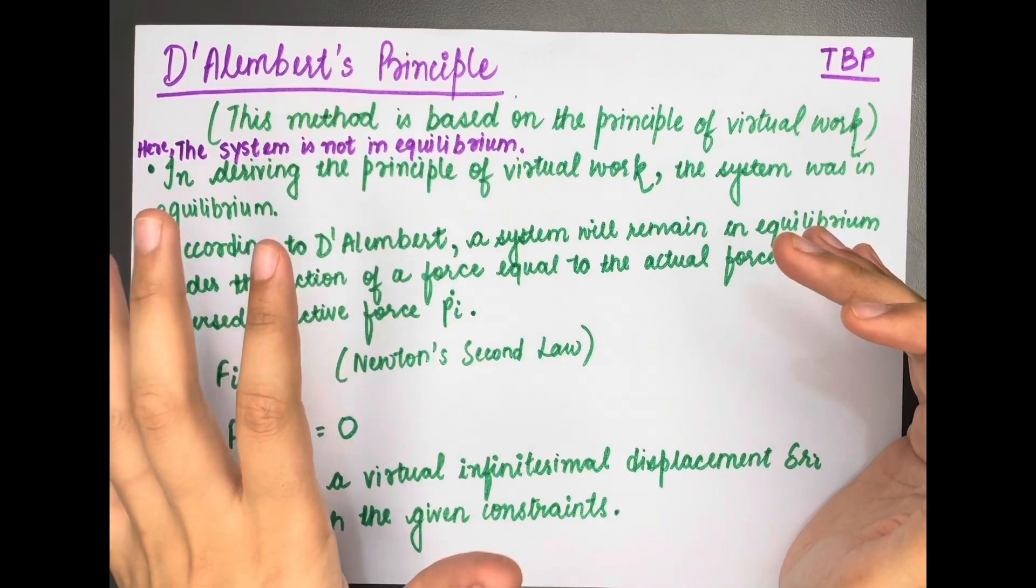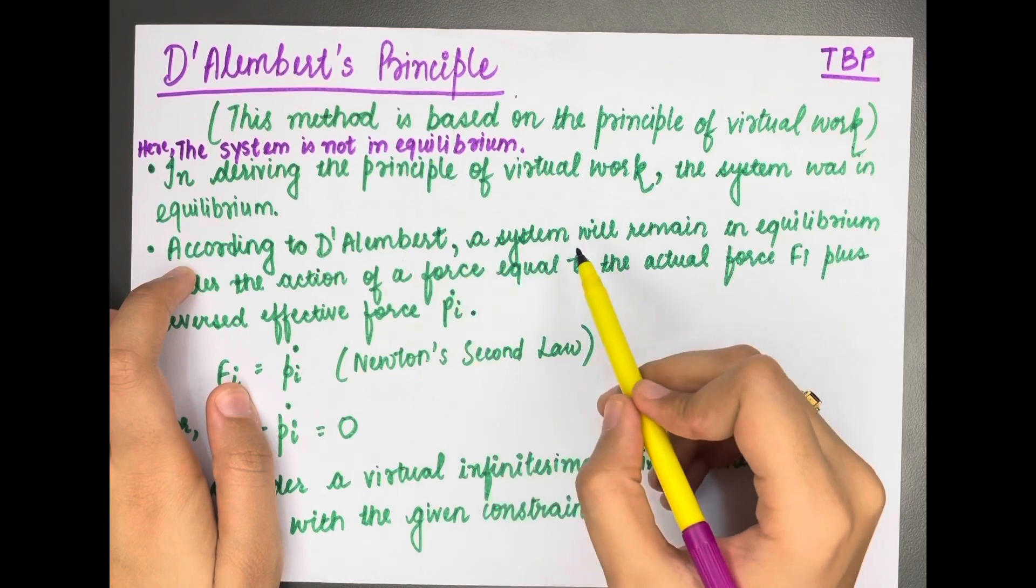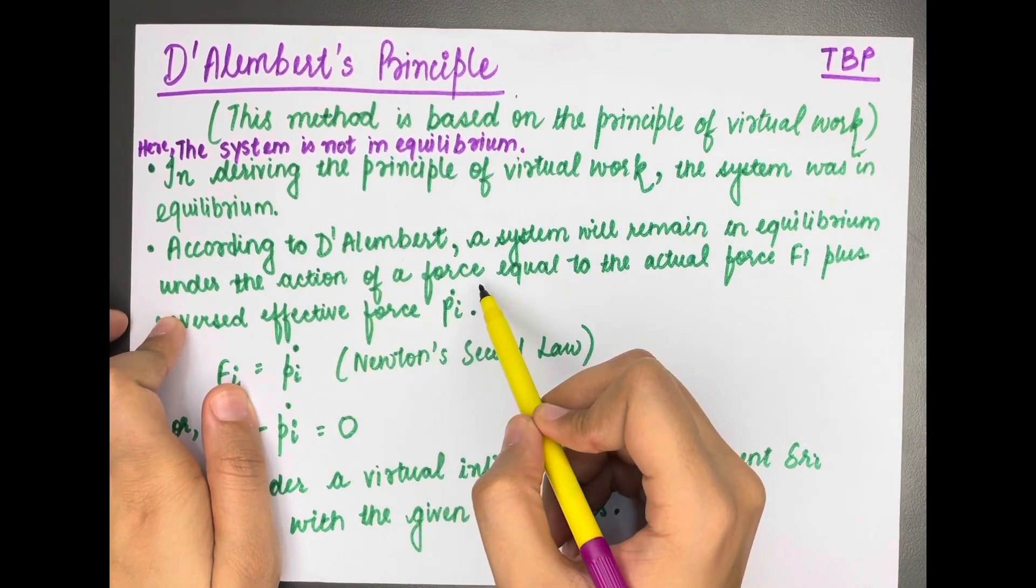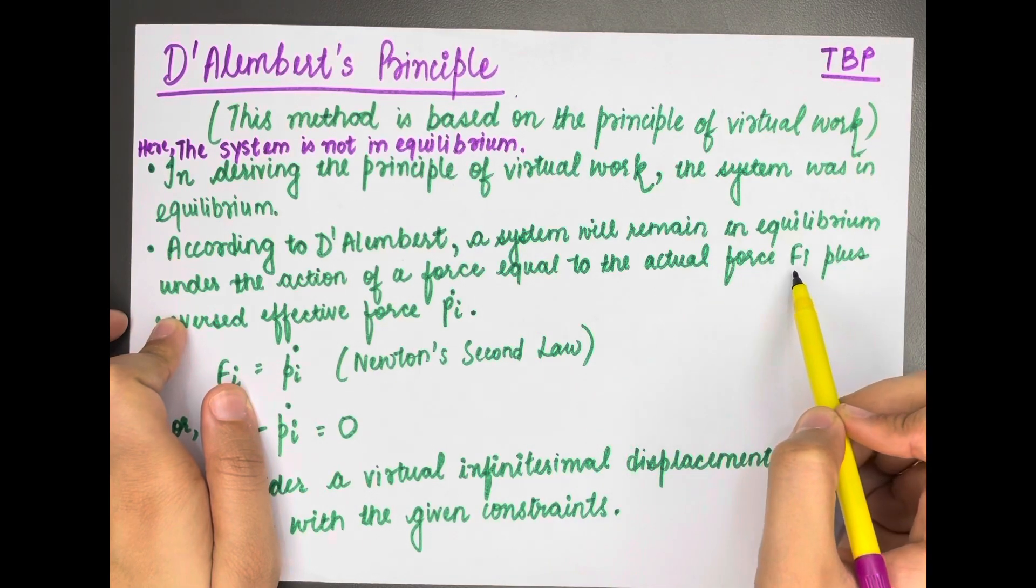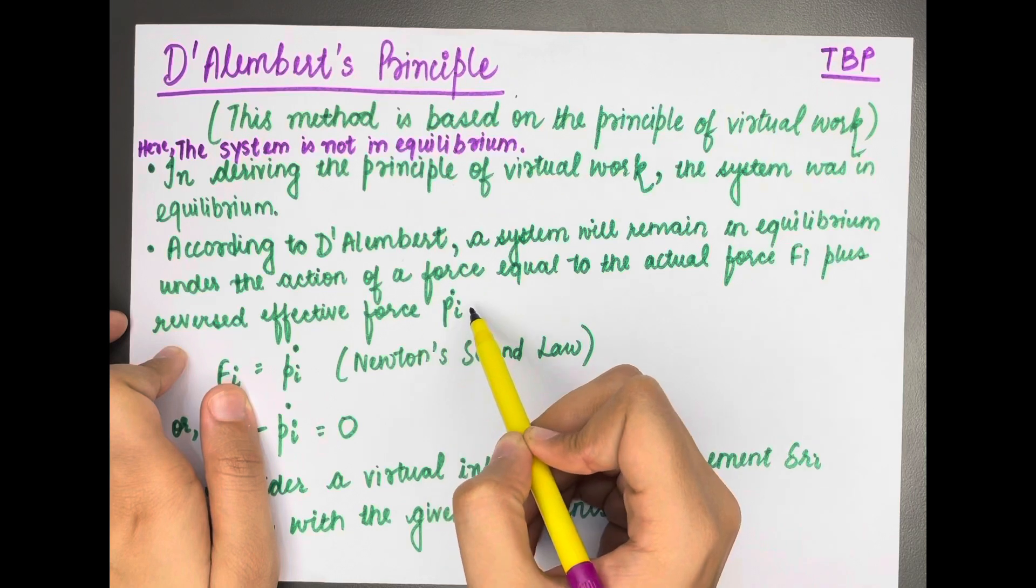How to make a system in equilibrium? According to D'Alembert, a system will remain in equilibrium under the action of a force equal to the actual force Fi plus reversed effective force pi dot. Pi dot comes from Newton's second law, which says F is equal to dp/dt, the rate of change of momentum.